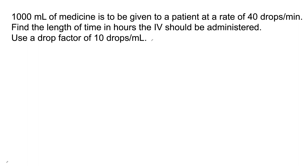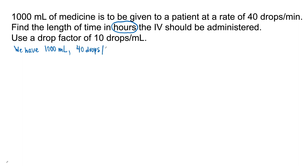Let's circle what we need to find — circle hours. When you don't know what to do, write down what you are given and what needs to be found. We have 1,000 ml. Then we have a flow rate: 40 drops per minute.